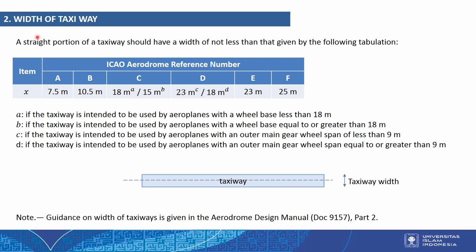The second component is width of taxiway. A straight portion of a taxiway should have a width of not less than that given in the tabulation — the taxiway width is based on the ICAO aerodrome reference code number.